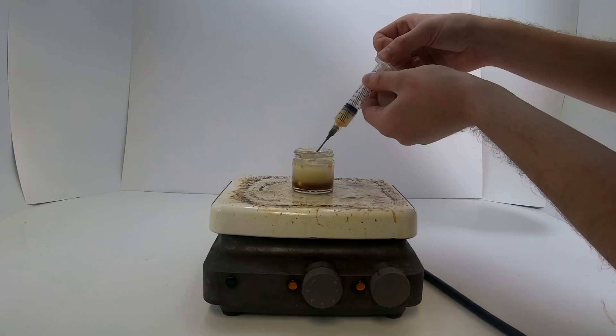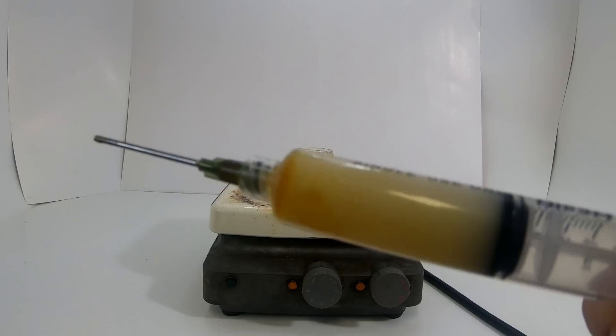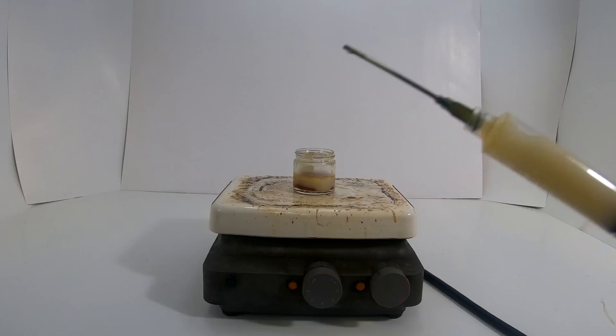The water is cloudy because of the ouzo effect. When the water to alcohol ratio is too high, certain oils are no longer soluble and they come out of the solution in the form of micro droplets that make the solution look cloudy like this.